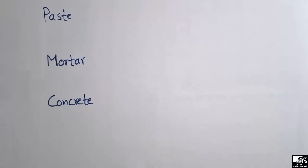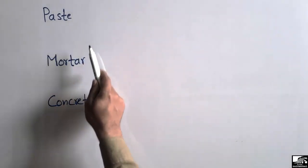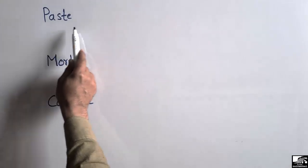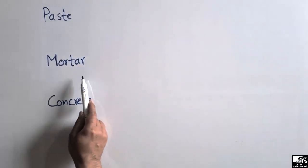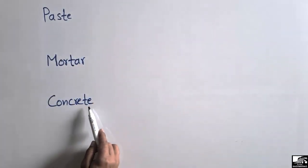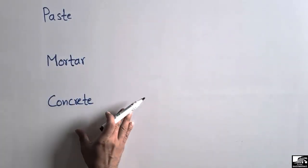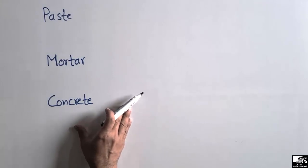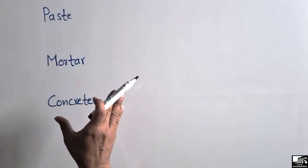Hello guys, welcome back to the Civil Engineering YouTube channel. Please subscribe to our channel for daily civil engineering videos. Today we are going to differentiate between three types of material that are most commonly used: paste, mortar, and concrete. What is the main difference between these three types of material?